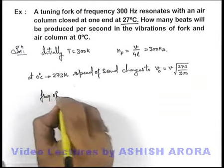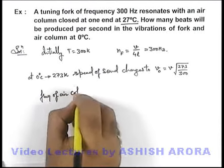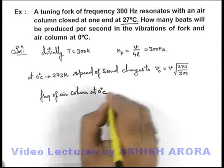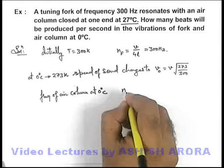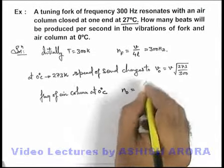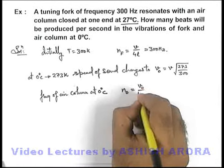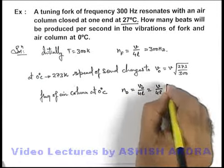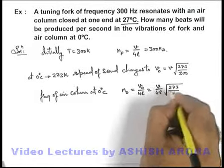Now frequency of air column at zero degrees centigrade can be given as n₀, which will be v₀ by 4l, which can now be given as v by 4l root of 273 by 300.